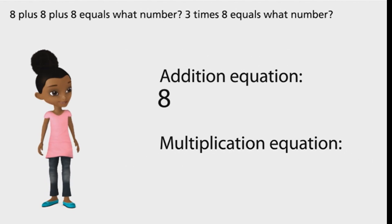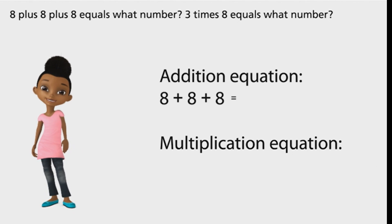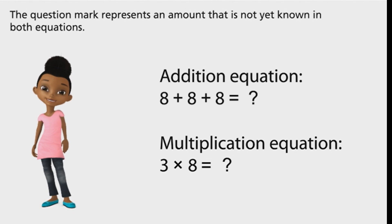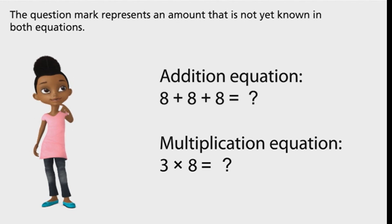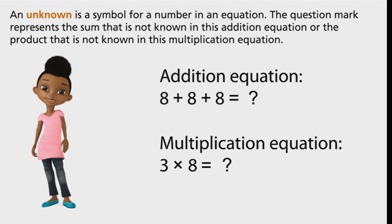Eight plus eight plus eight plus eight equals what number? Three times eight equals what number? The question mark represents an amount that is not yet known in both equations. An unknown is a symbol for a number in an equation. The question mark represents the sum not known in the addition equation, or the product not known in the multiplication equation.